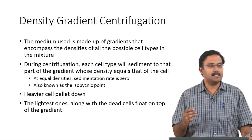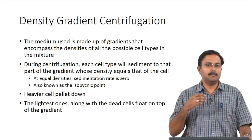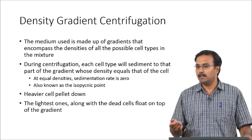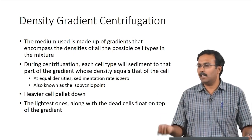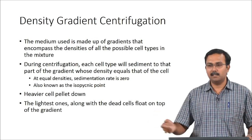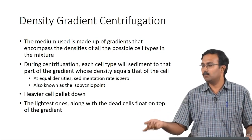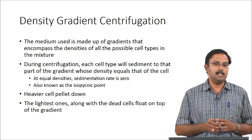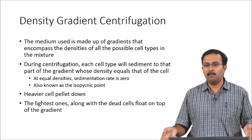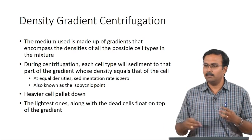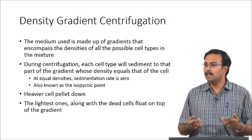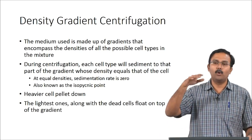This equilibrium point is called the isopycnic point, and this ensures that cells are separated. If cells are much denser than anything in the medium they will form pellets at the bottom, which can be removed. The lightest cells and dead cells will float on top of the gradient. There is some cell damage in this technique due to shear, and the dead cells which are lysed will be very light and float on the surface.